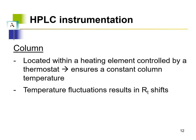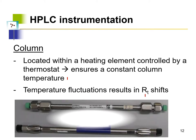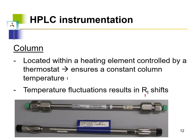The next component is the column, which, similar to a GC column, is located within a heating element where its temperature is controlled. Temperature affects the retention times of chemical components, so the column must be maintained at a set temperature — typically 30 or 40 degrees Celsius — to ensure reproducible retention times across runs. HPLC columns are much shorter than GC columns; common lengths include 5, 10, 15, and 30 cm.